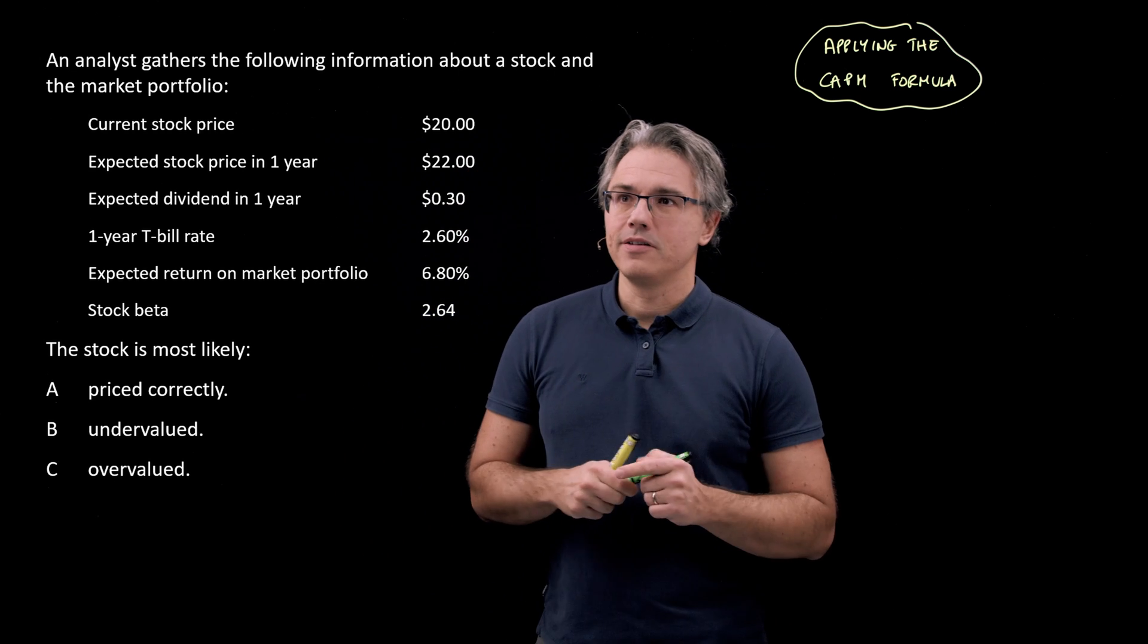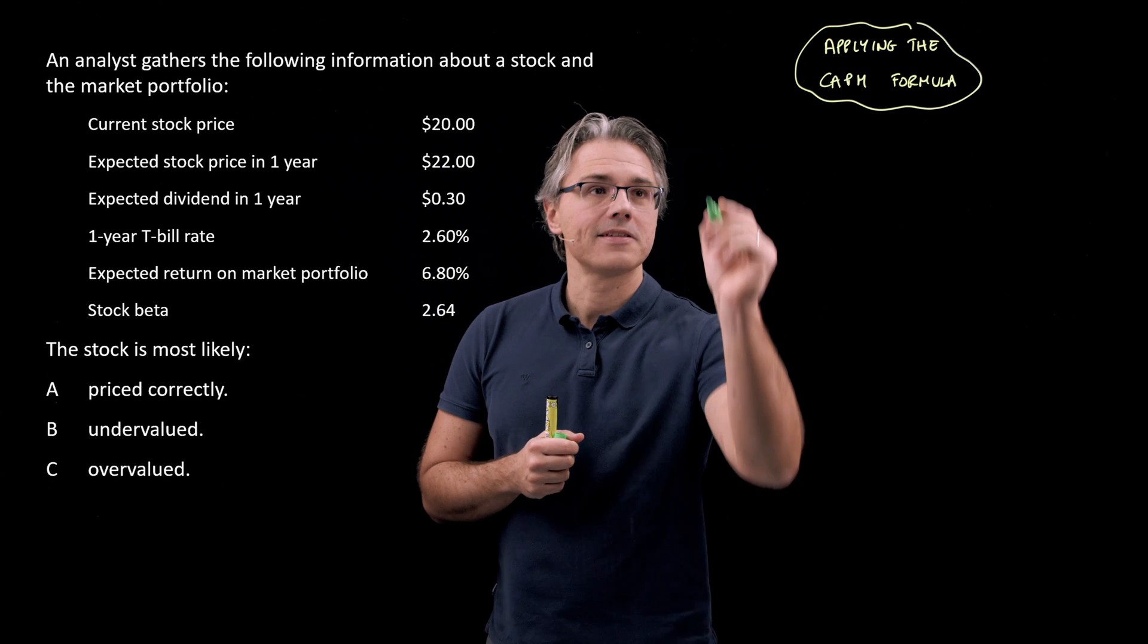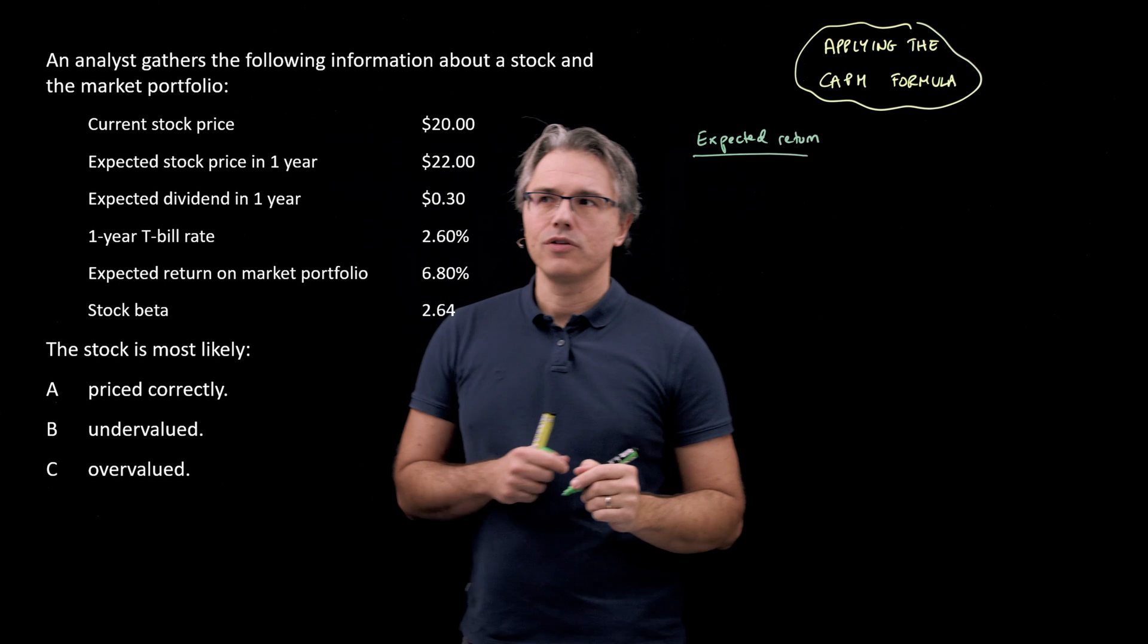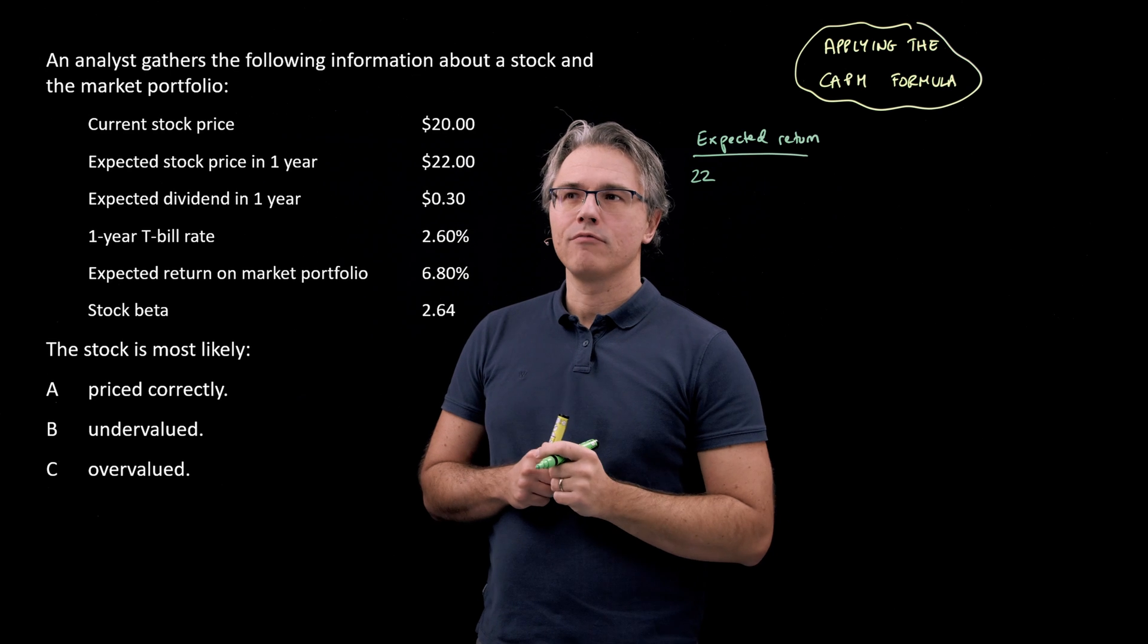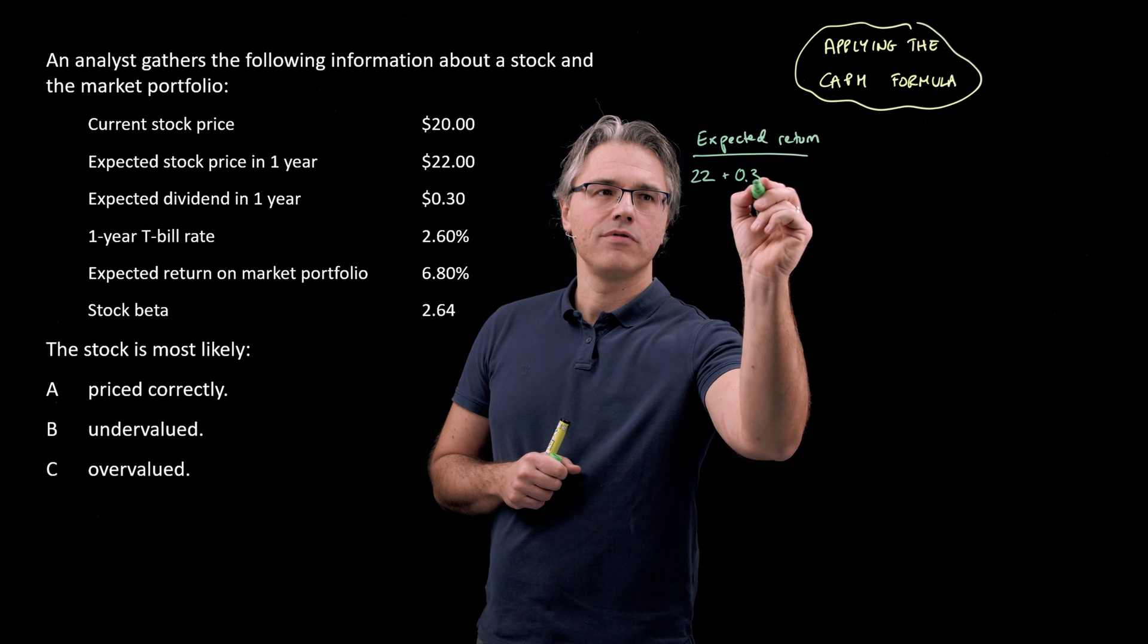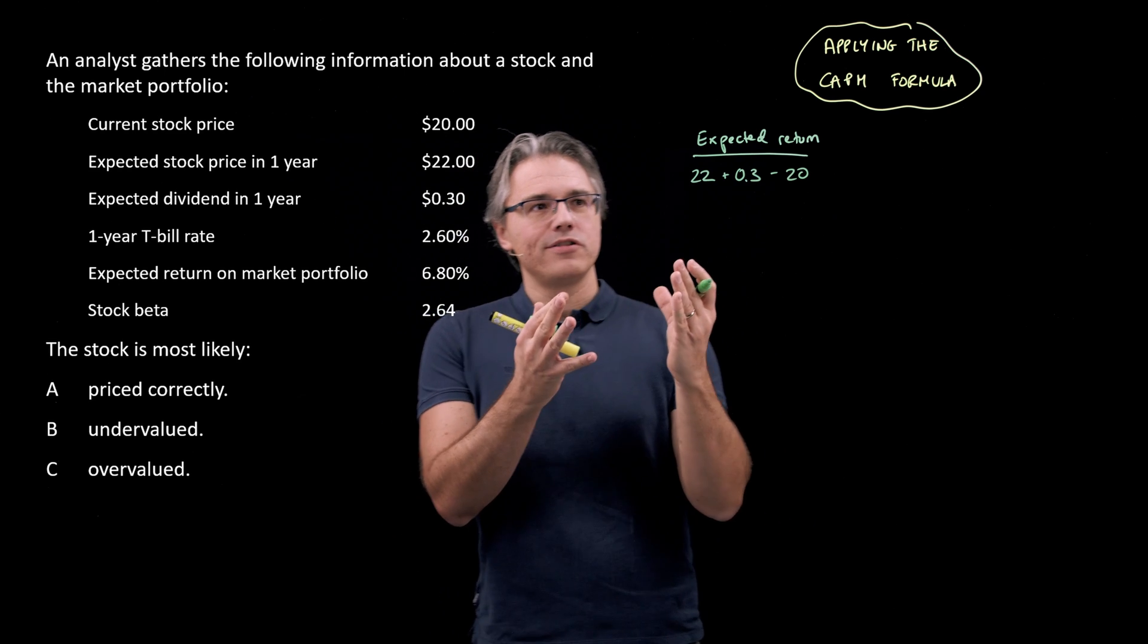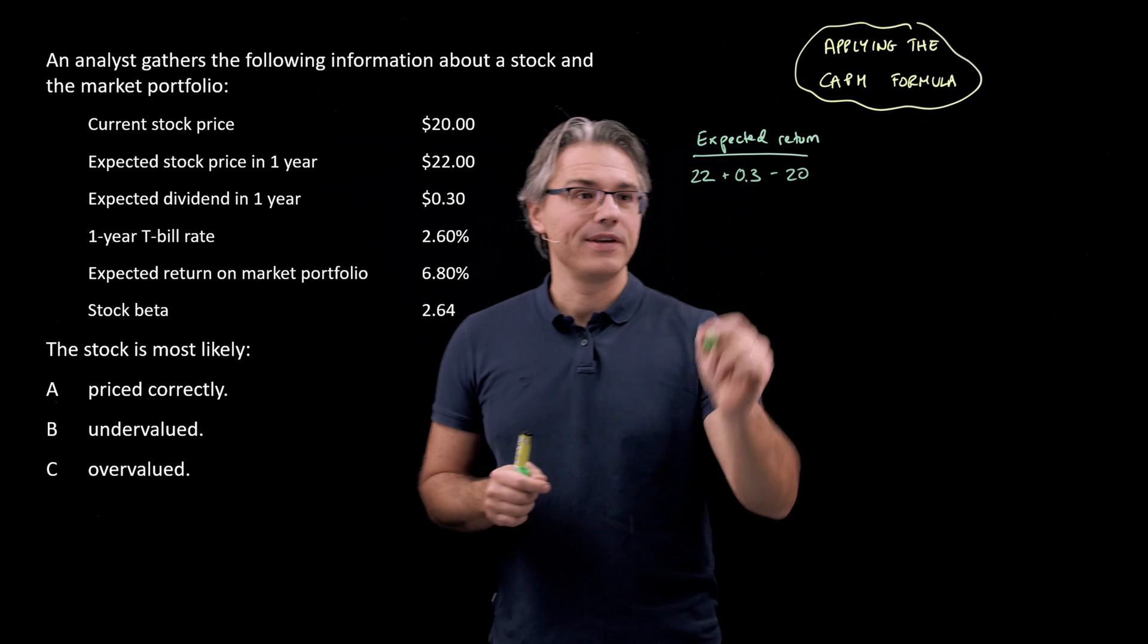So let me start by figuring out what the expected return is on the stock. The expected return, given the data we've got, is the stock is expected to be priced at a level of 22 in one year's time. It's supposed to give us a dividend of 0.3, and right now it is worth just 20—that's the current stock price. So I've basically created an expression which yields a result of 2.3, which is the overall profit we're going to get from this stock.